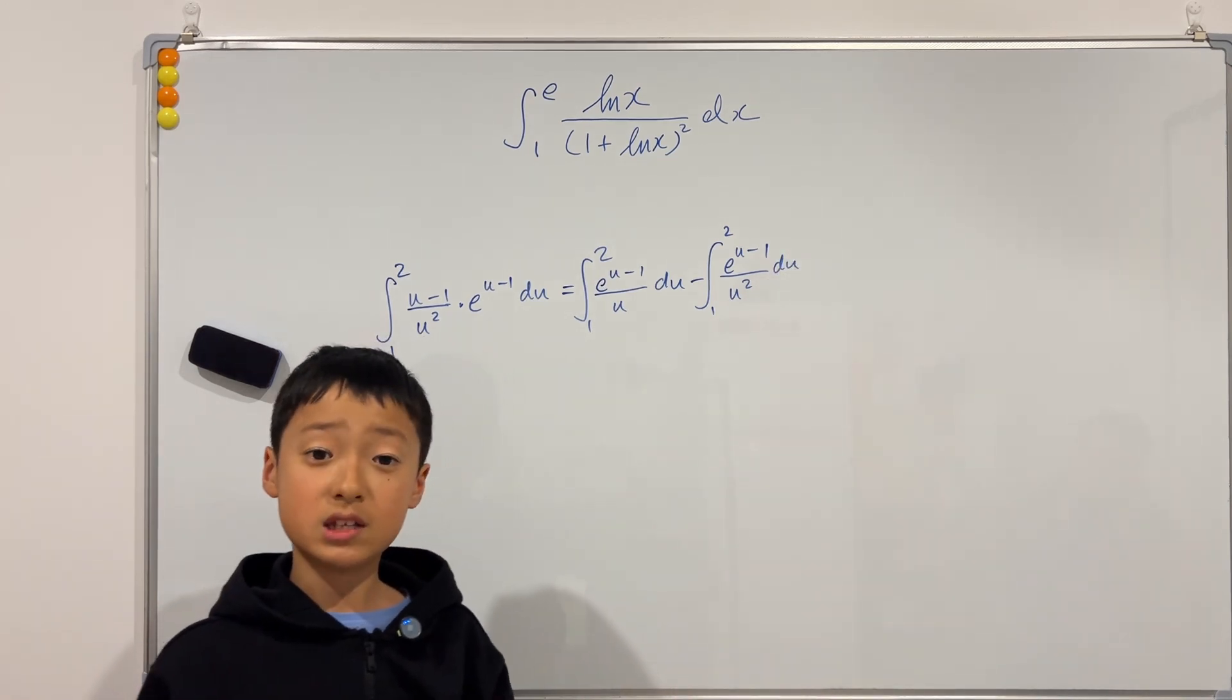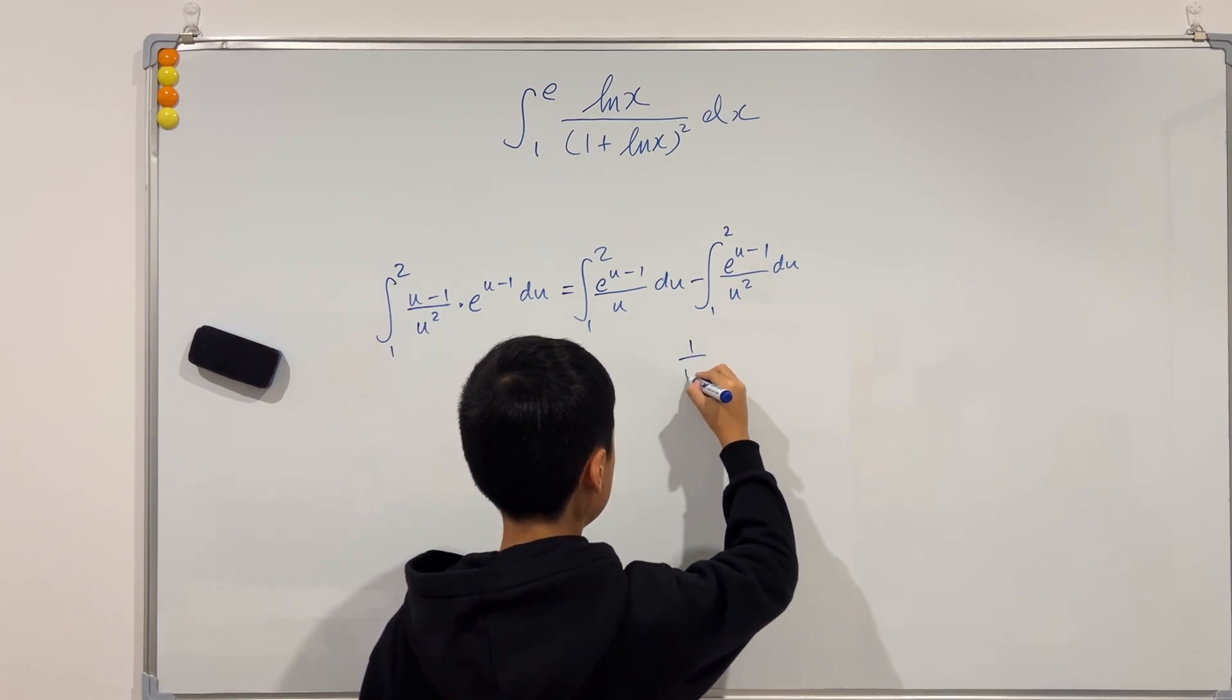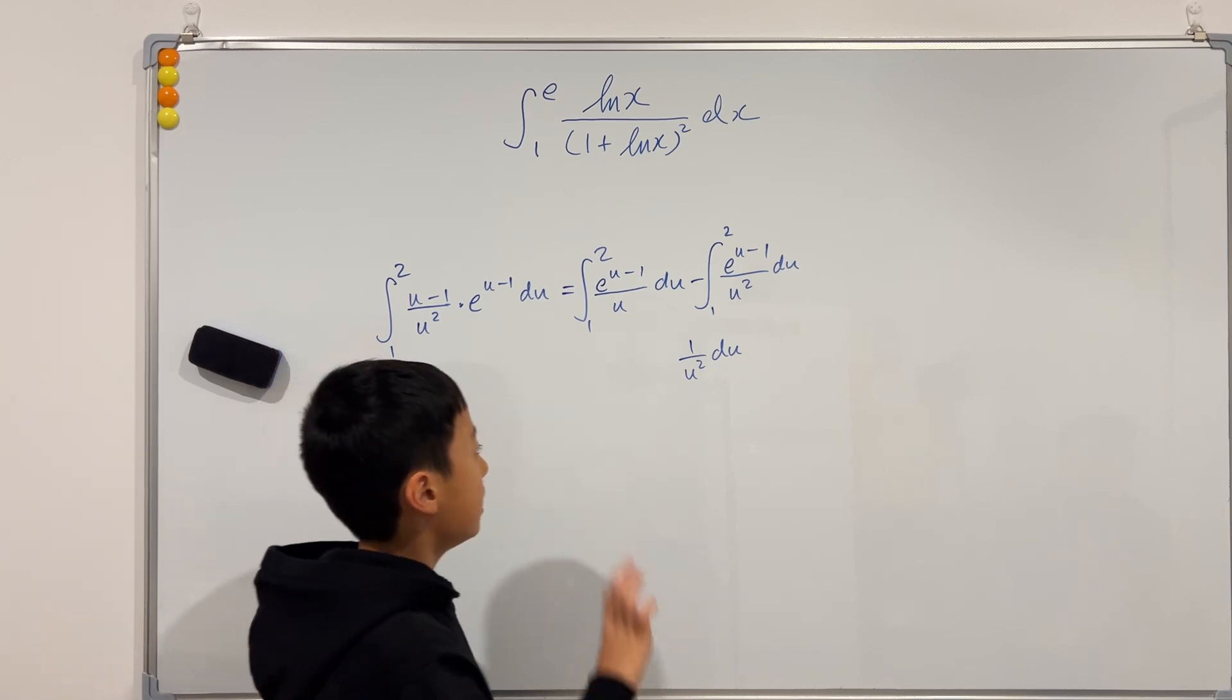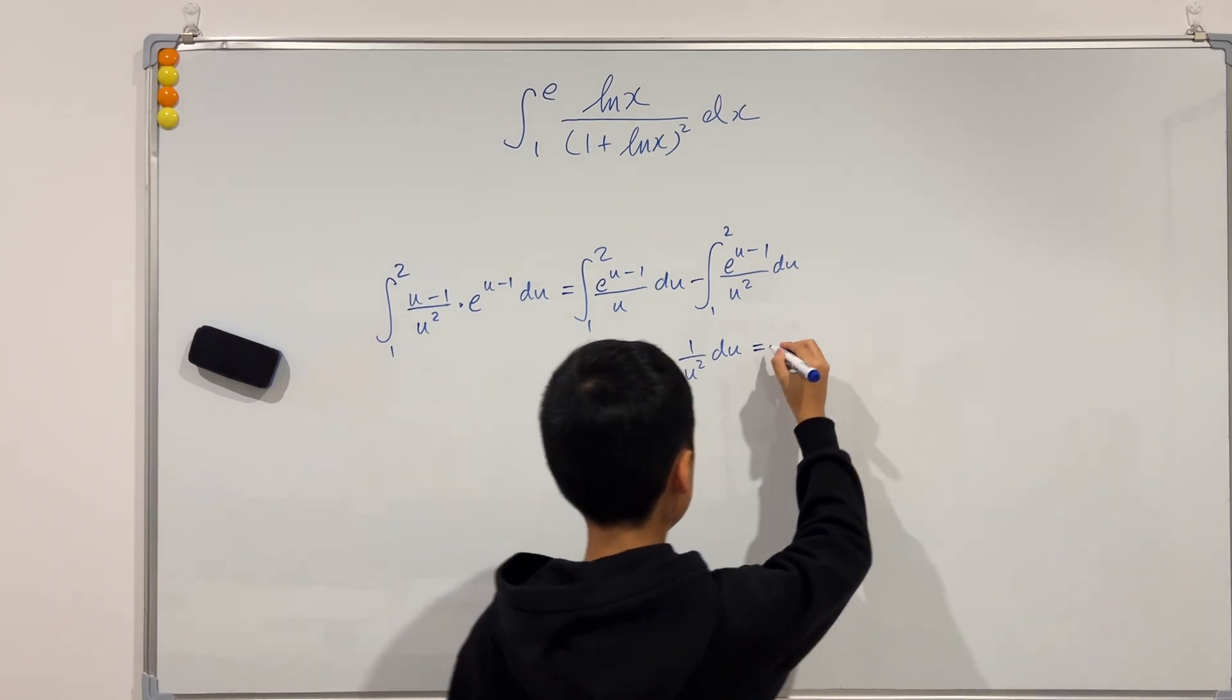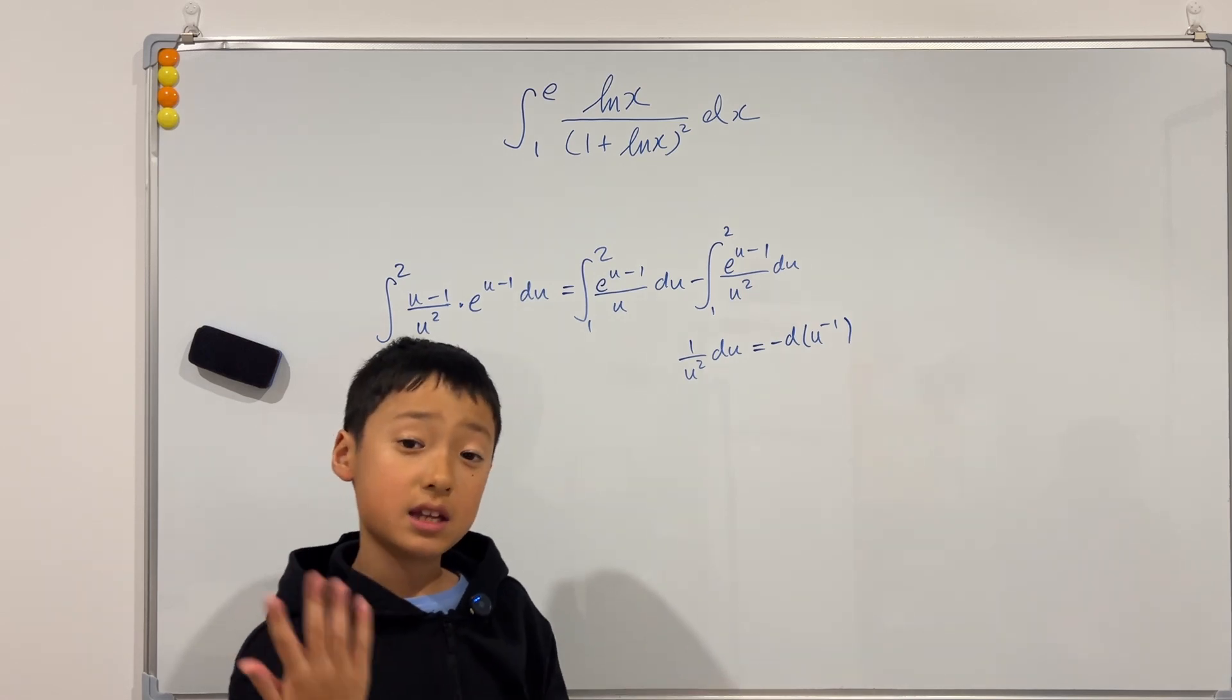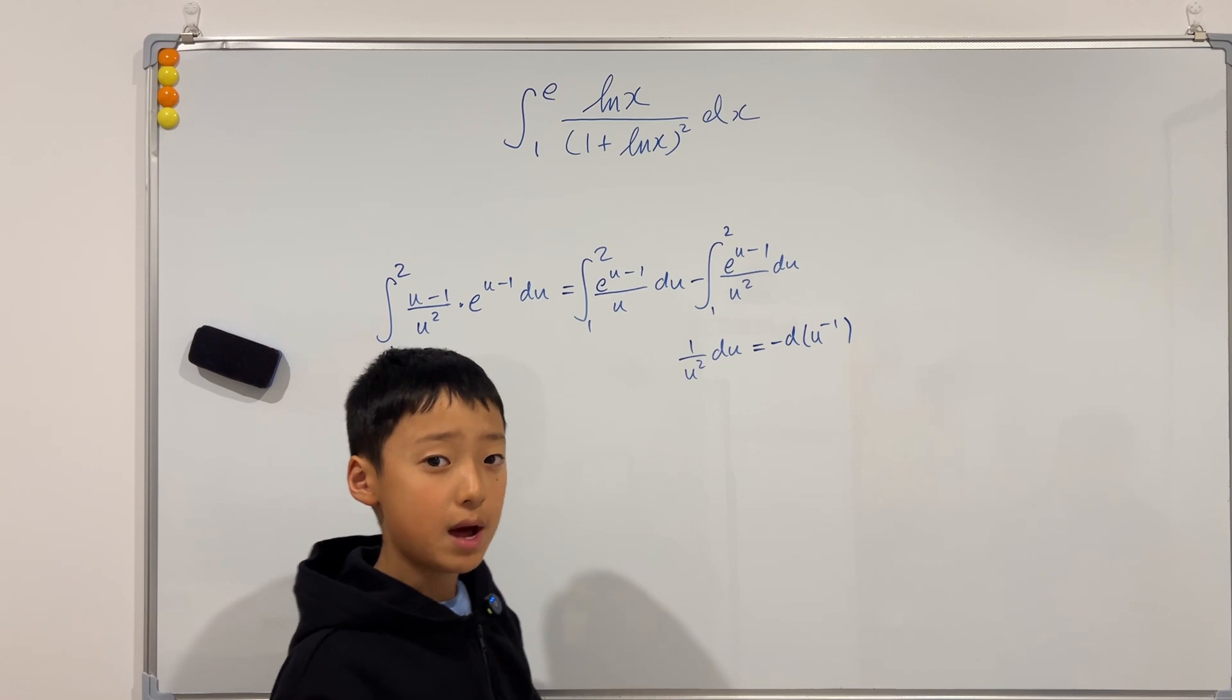And this over u squared is actually very, very helpful. Because once you see, if you notice, this integral has 1 over u squared du. And once you see this, you should think of something: integration by parts. Why? Because you can easily make the form of integration by parts. Because this is just equal to negative d u to the negative 1. Because the derivative of 1 over u is negative 1 over u squared. This negative and that negative counts out to just become 1 over u squared. So we can use integration by parts.